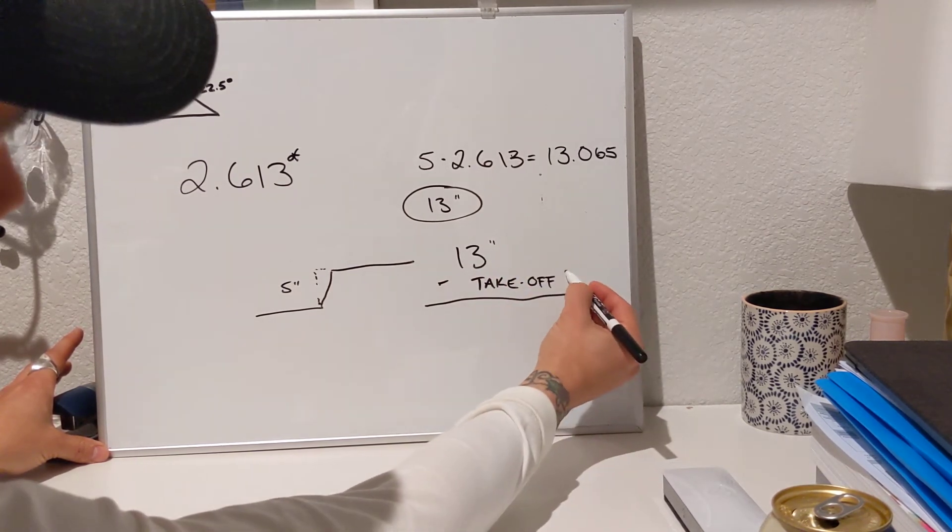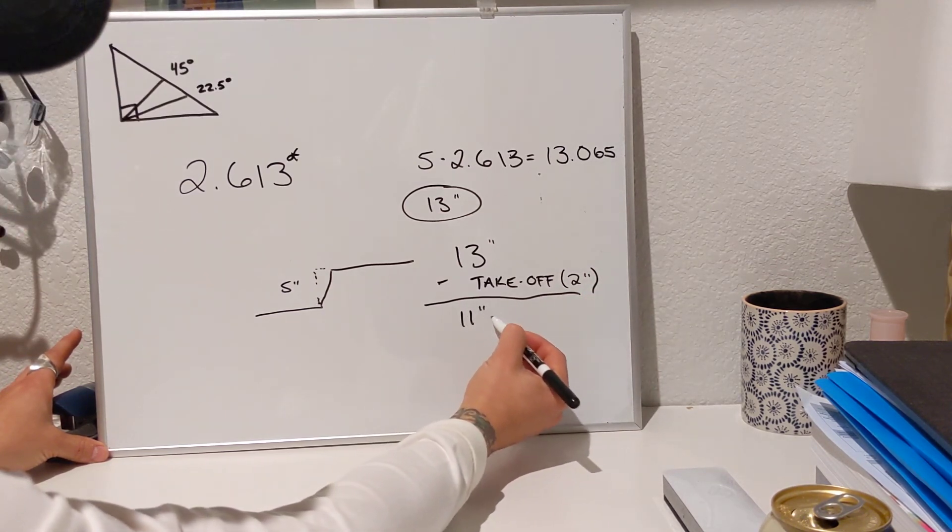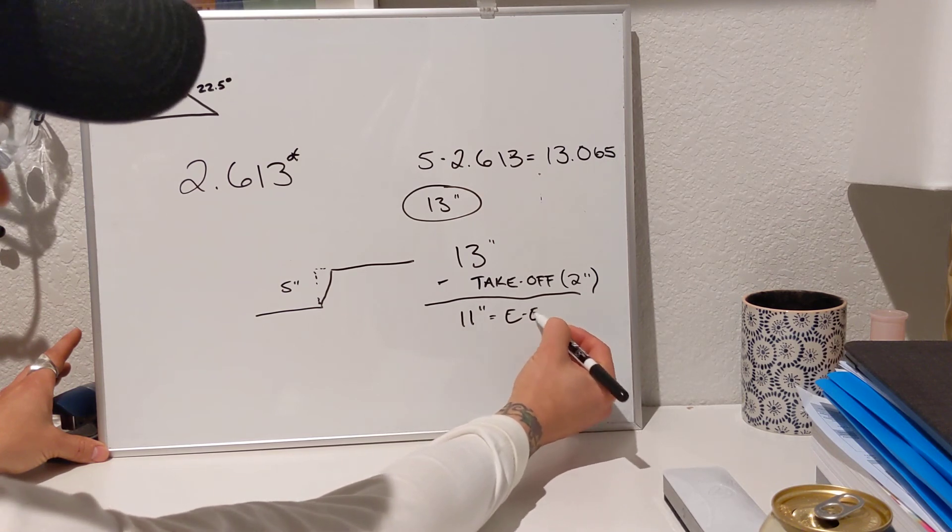...and that's going to give you your end to end cut. So let's go ahead and assume that that is 2 inches. That's going to be 11 inches. Equals your end to end cut.